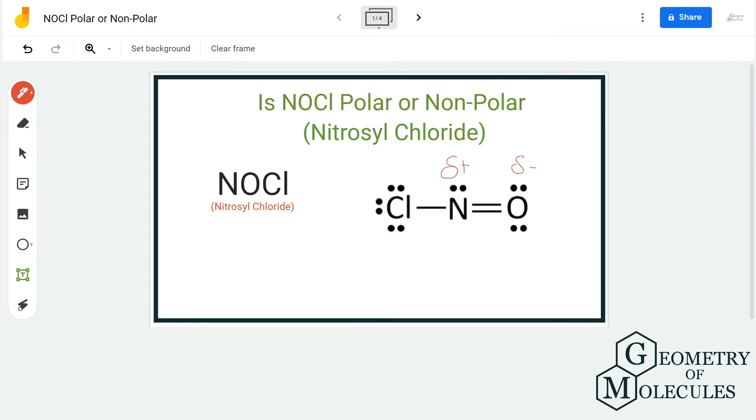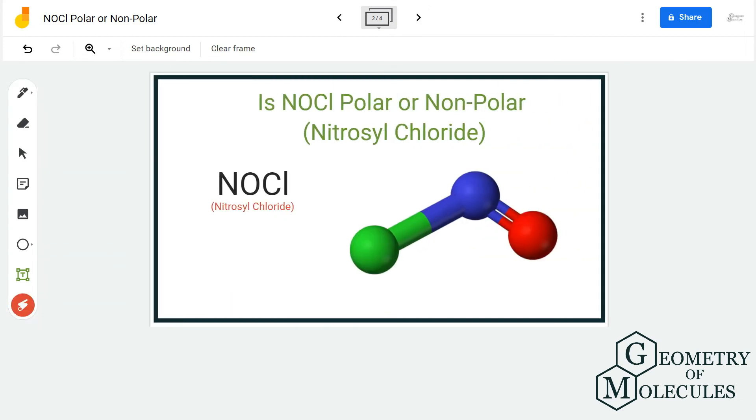You can also look at this structure in 3D, which will help you determine the polarity better. As you can see, the distribution is uneven.